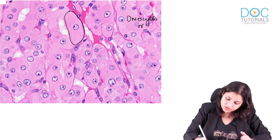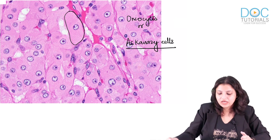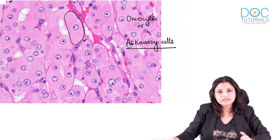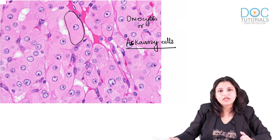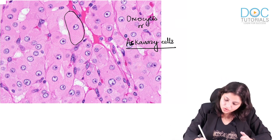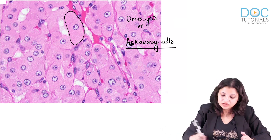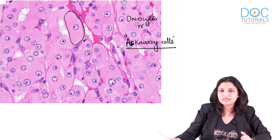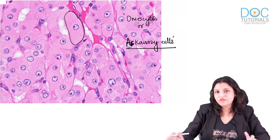Oncocytes are also called Askanazy cells. So the other name for oncocytes is Askanazy cells. Oncocytes or Askanazy cells — you should be very clear with that.